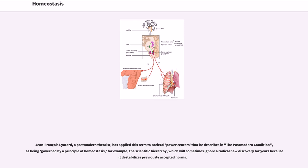Sociologists and psychologists may refer to stress homeostasis — the tendency of a population or an individual to stay at a certain level of stress, often generating artificial stresses if the natural level of stress is not enough. Jean-François Lyotard, a postmodern theorist, has applied this term to societal power centers that he describes in the postmodern condition as being governed by a principle of homeostasis — for example, the scientific hierarchy, which will sometimes ignore a radical new discovery for years because it destabilizes previously accepted norms.